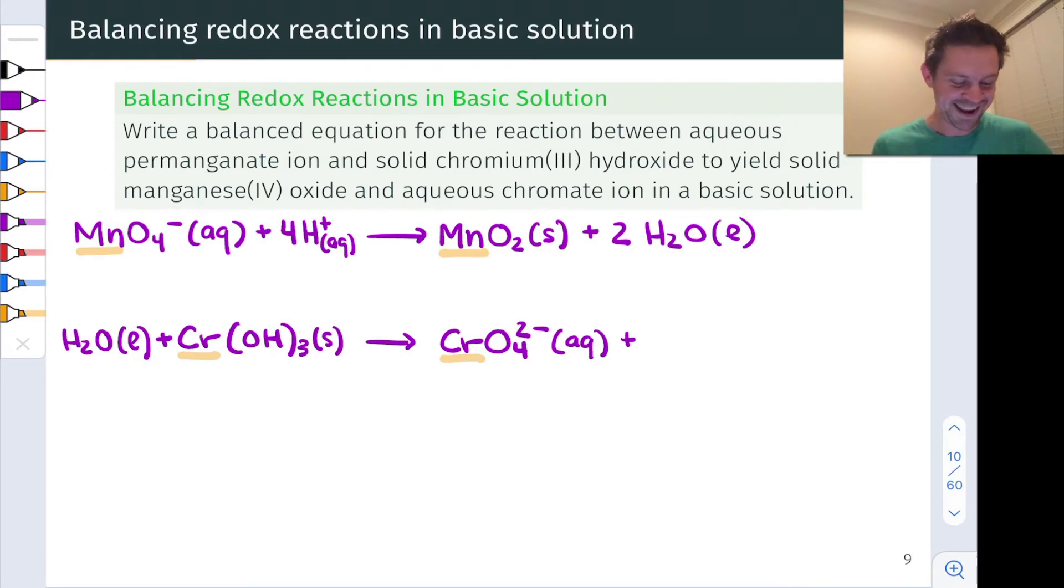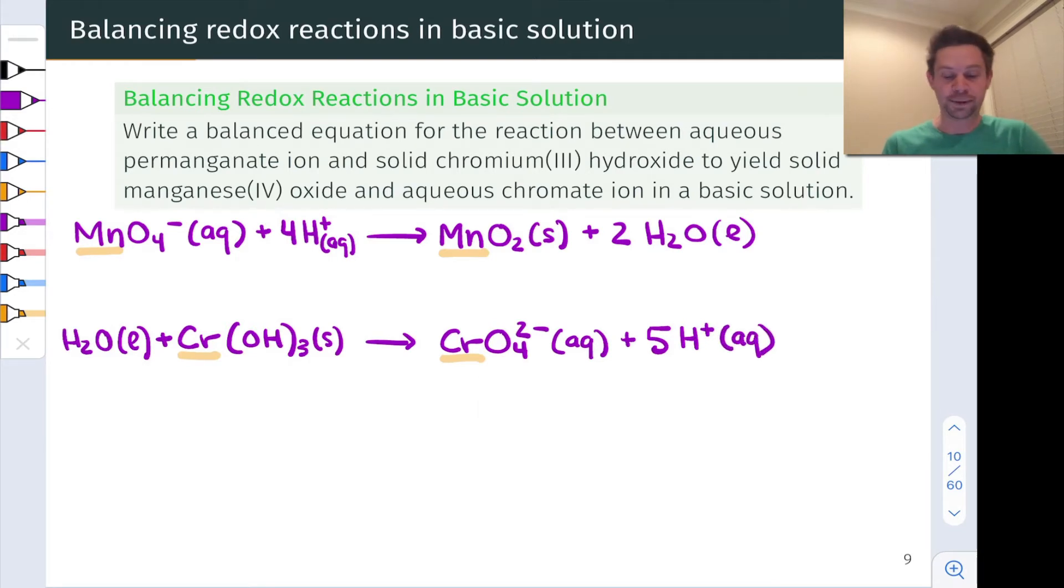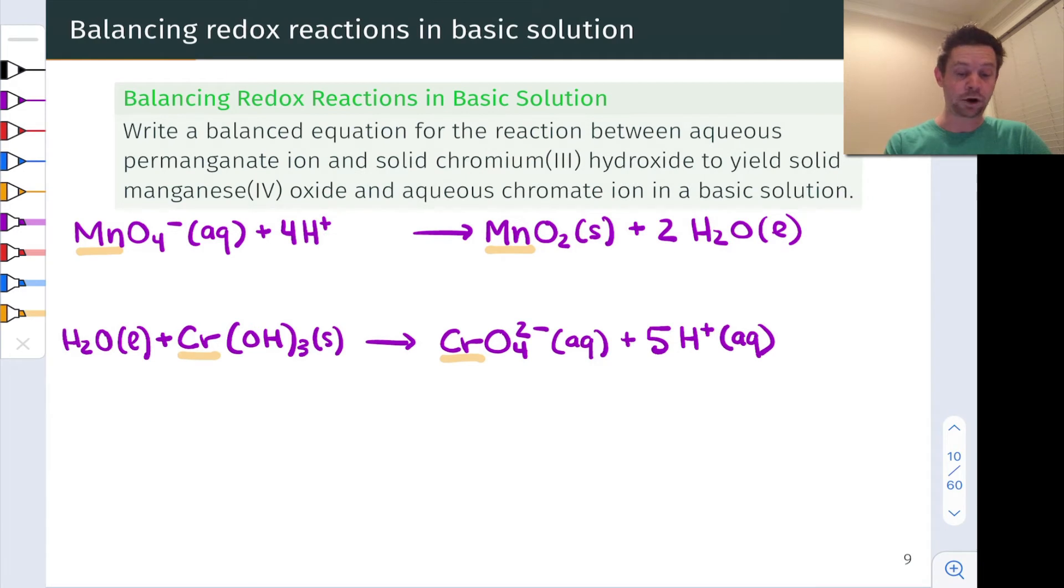But wait, I've also got three H's in the chromium hydroxide that I need to watch out for. So in fact, I have a total of five hydrogens on the left-hand side. So five H pluses need to appear on the left-hand side here. And now we're all balanced up on hydrogen. And indeed, if you take a close look at these half reactions, you'll notice that we are all balanced up on all atoms. And I encourage you to pause the video and verify this before moving forward.